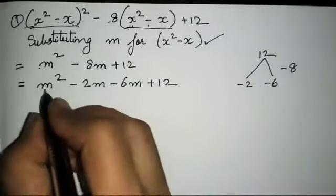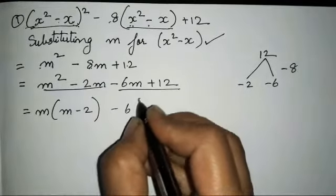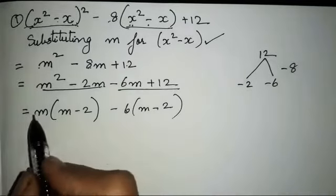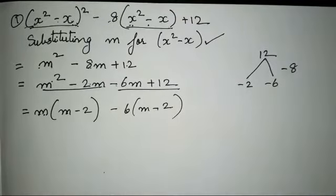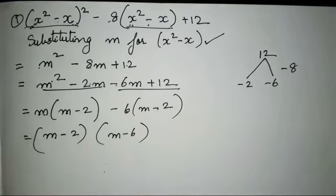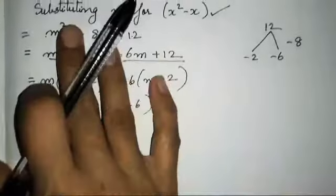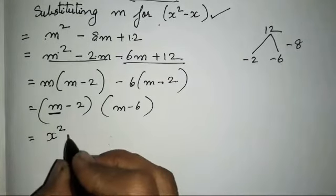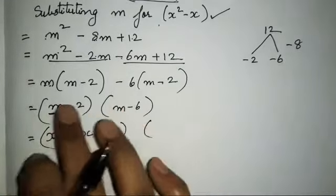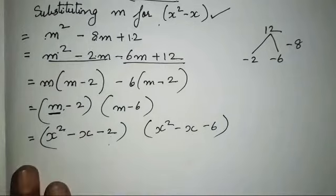What we have done: 1×12=12, and the factors are -2 and -6 in order to get -8 as the middle term. From here the same steps as question 1 are followed. We get pairs: m(m-2) - 6(m-2). So the common bracket is (m-2) and the other is (m-6). Now substitute back: m is x²-x. So x²-x-2 and x²-x-6. This is the only difference here.